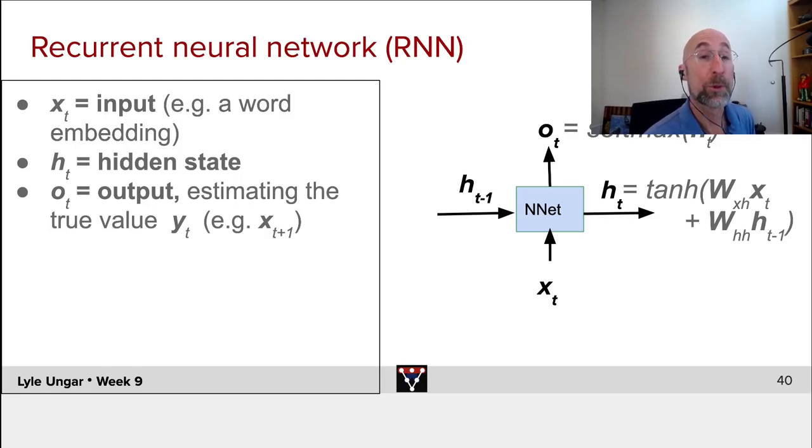Pass that through some transformation function. People often use hyperbolic tangents here because the gradients seem to be a little more stable, but you could use either one. That then gives you the new hidden state.